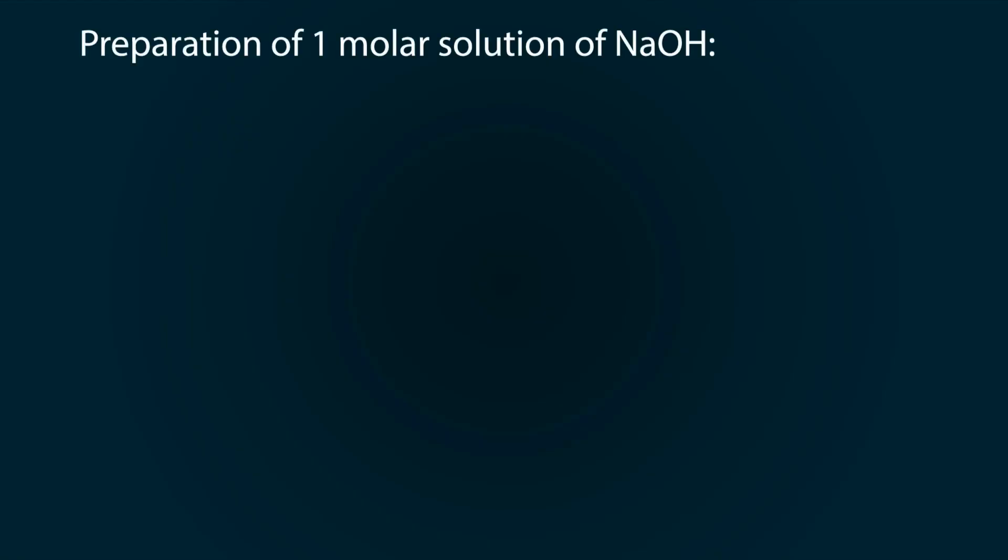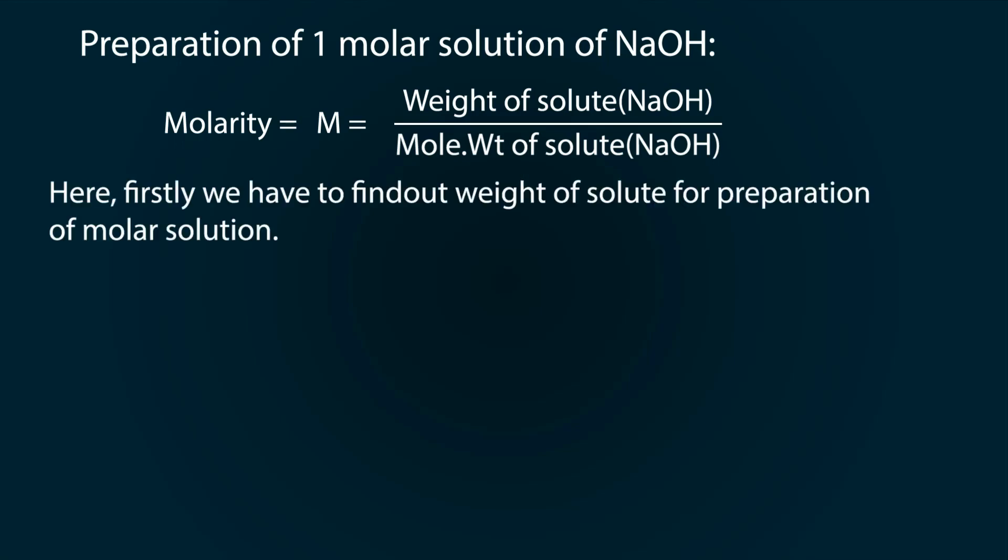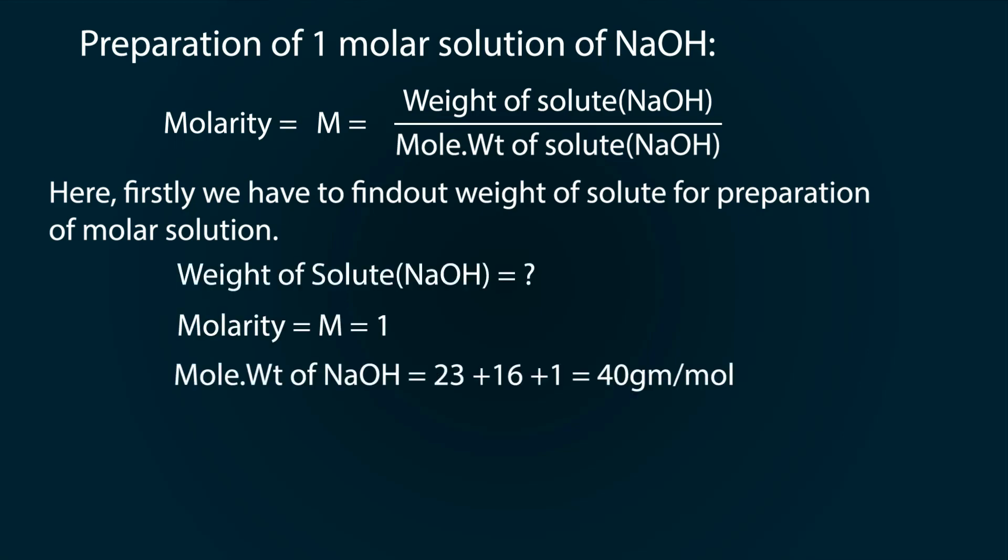First of all, we have to find out the molarity of NaOH. The formula of molarity is the weight of solute divided by its molecular weight. Now, firstly we have to find out the weight of solute for the production of one molar solution. The molecular weight of NaOH is 40 gram per mole.